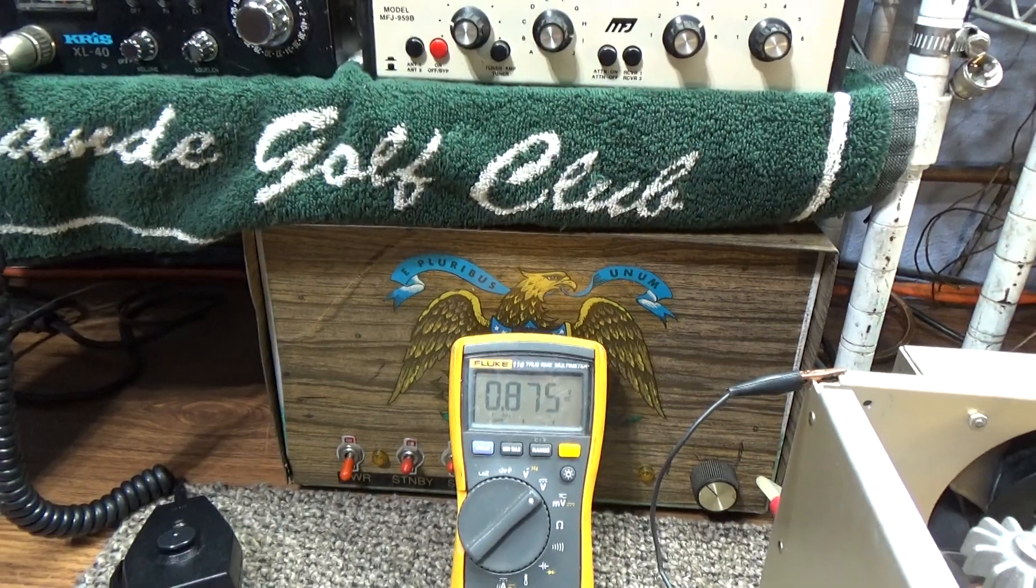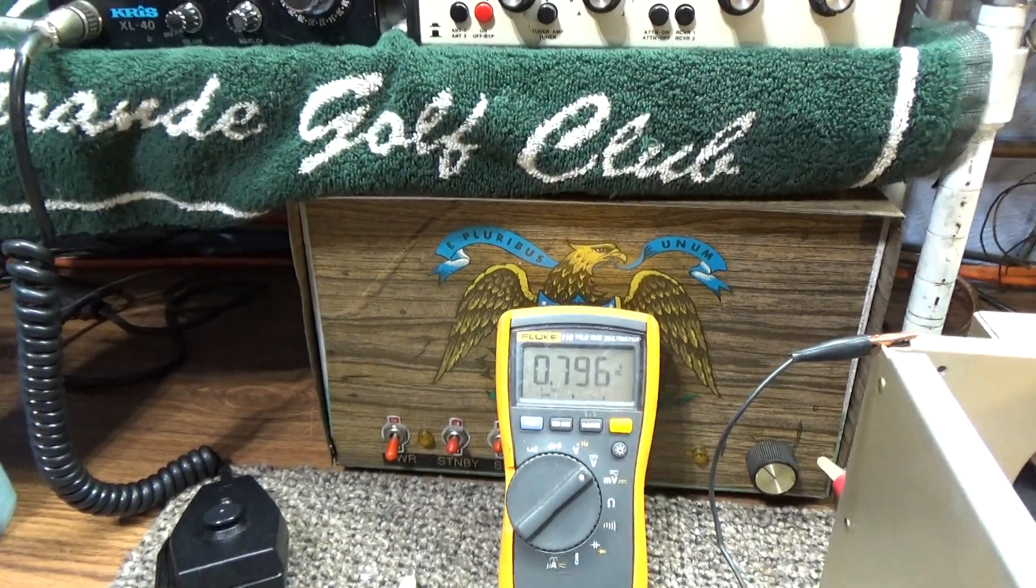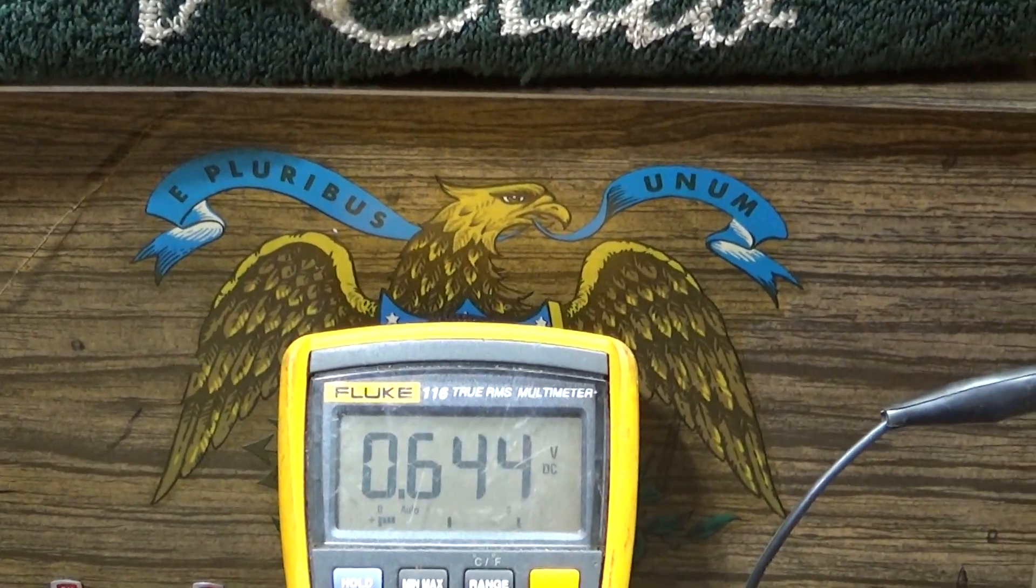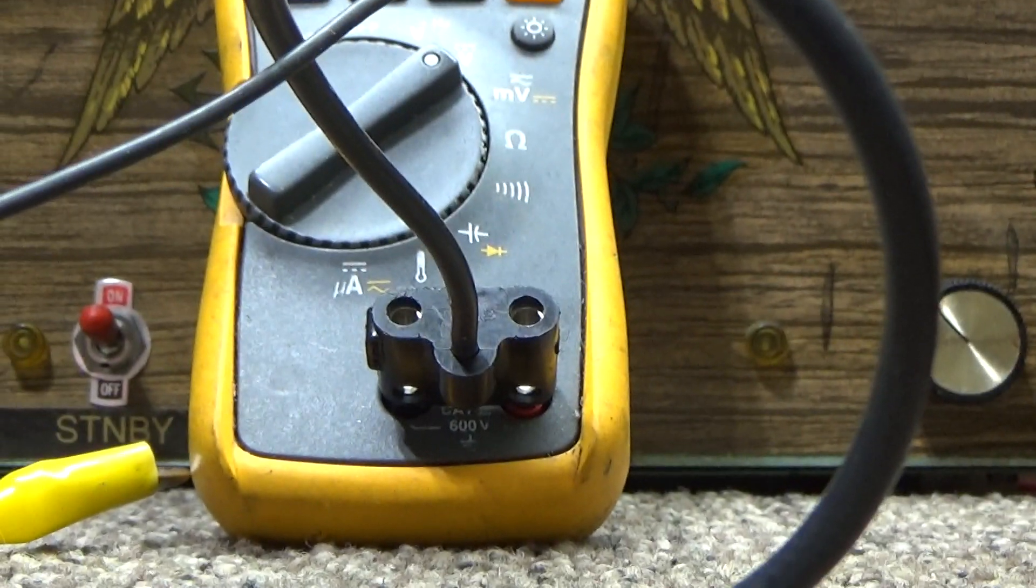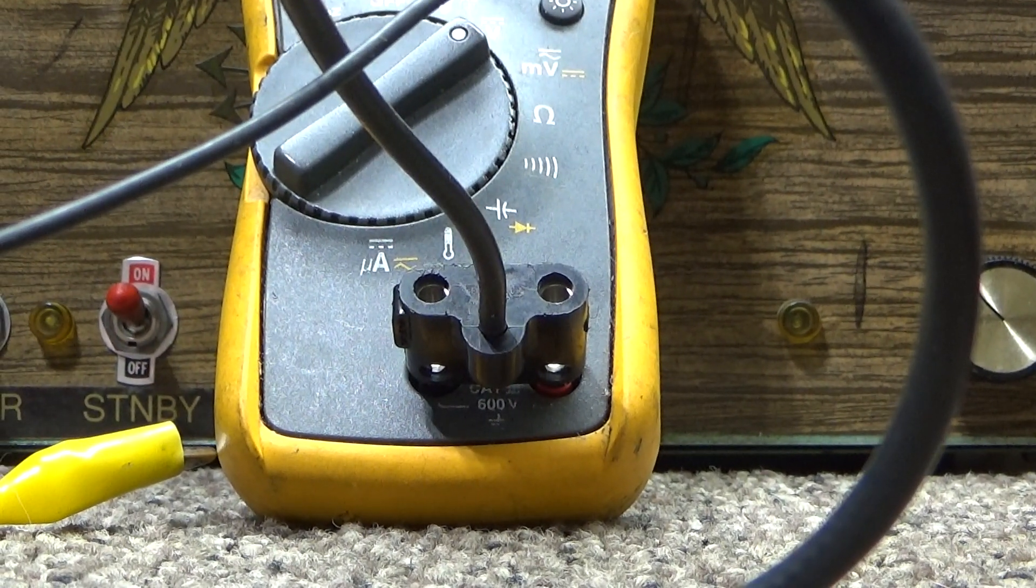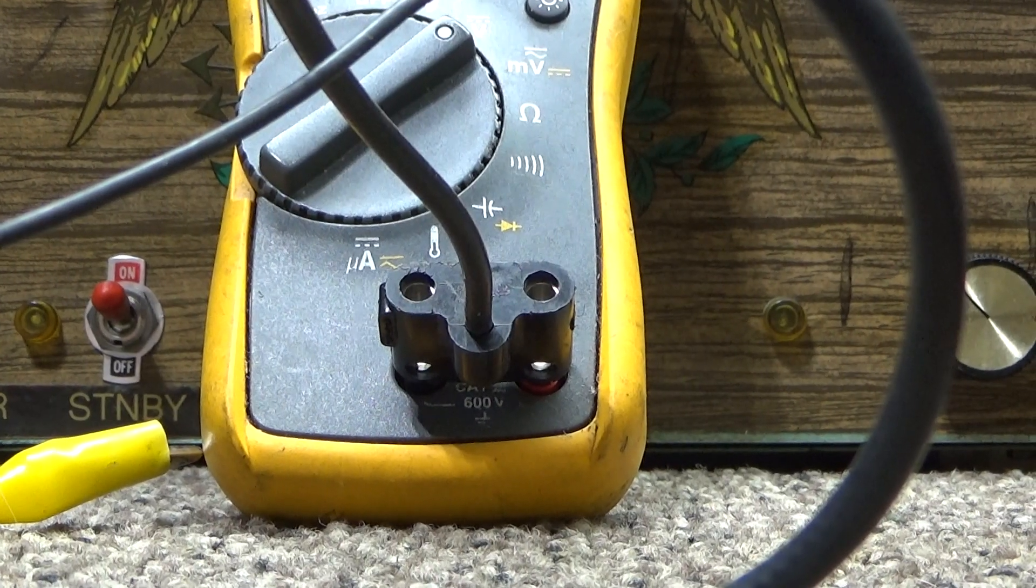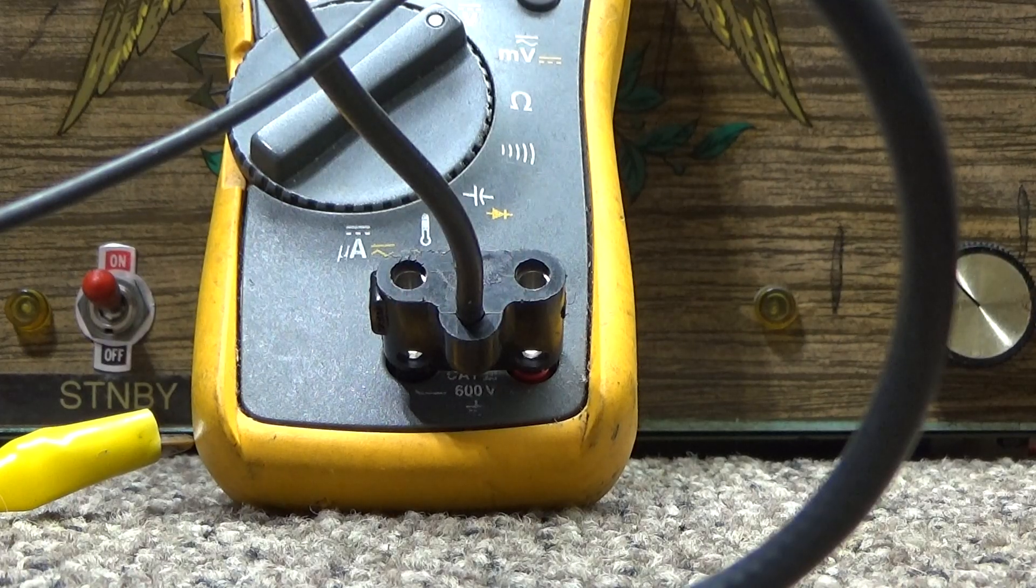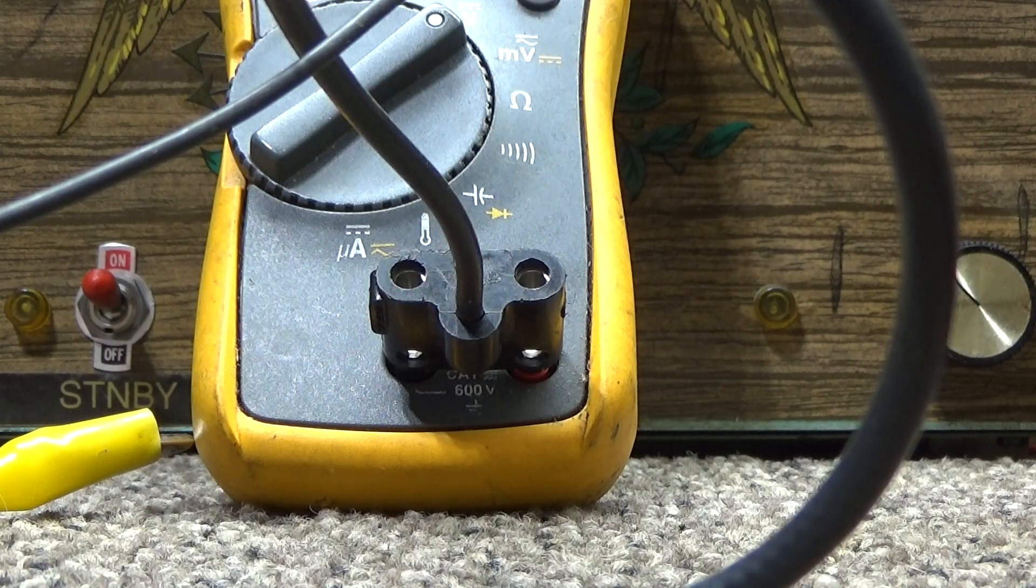And you can see the meter dropping there. 0.8, 0.7—that's 700, 600—and steady dropping. And while it's doing that, I'm going to sit the camera down and unplug it for a double safety thing. Because before I play with amps like this, I make sure they are unplugged.